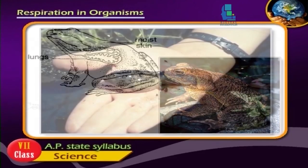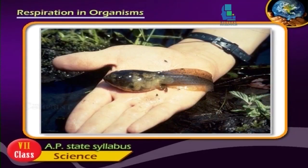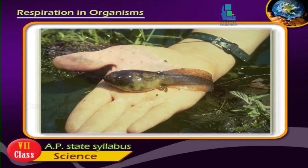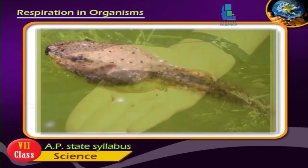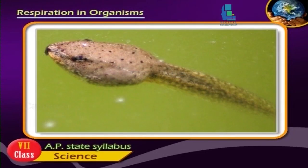In baby frogs or tadpoles, there are special organs like that of fishes called gills. These gills help them to breathe in water by taking in the air dissolved in water. Tadpoles of the frog live only in water, but the frog lives either on land or in water.